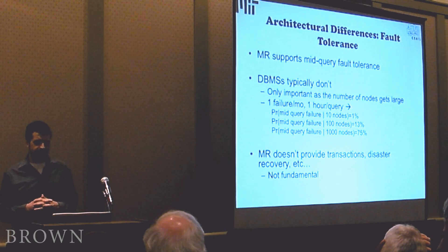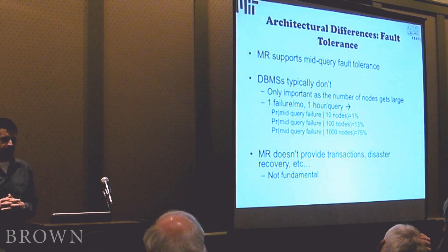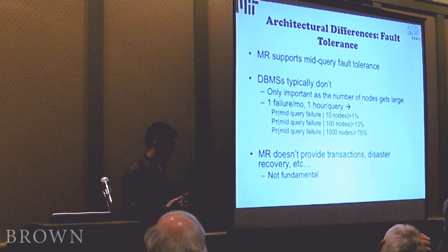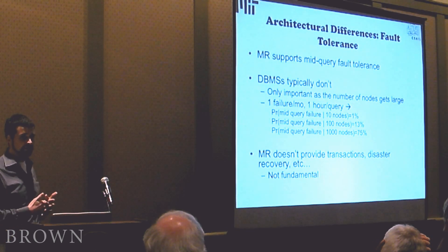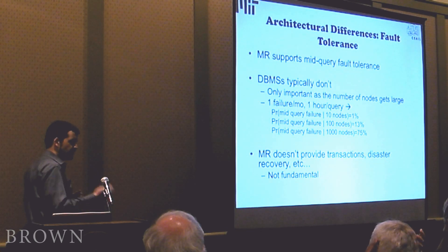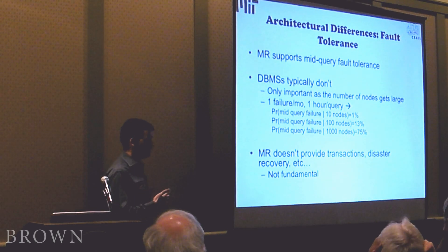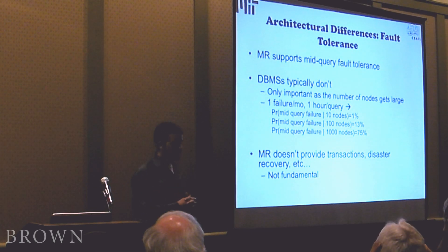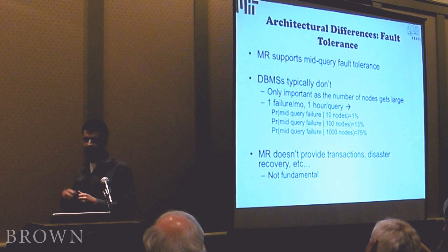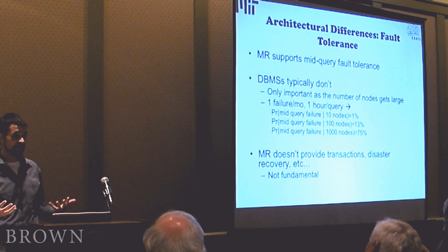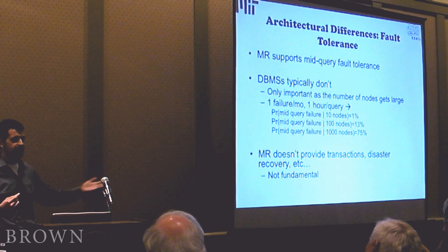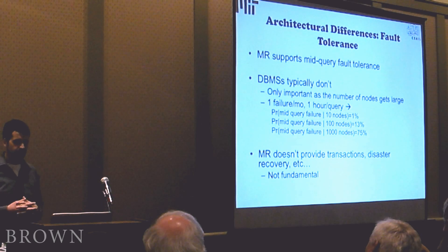The final architectural difference I want to briefly mention is fault tolerance. This is one of the things that MapReduce advocates often say — MapReduce has this great fault tolerance model. MapReduce provides query fault tolerance, so in the middle of a long-running operation, if one of the nodes crashes, MapReduce will restart that node and the operation itself will continue and complete. You don't have to restart the computation if one of the nodes crashes.